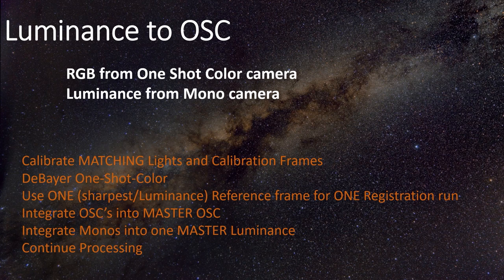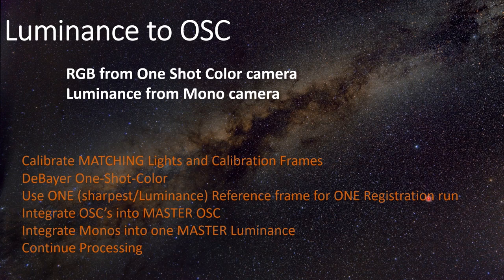Not all diverse data stems from a goof — sometimes you want to do something different. For instance, many people use a one-shot color camera to get their RGB and get their luminance from a mono camera. To do that, calibrate matching lights with calibration frames as always, de-Bayer your one-shot color, and use the sharpest luminance as one reference frame for registration with all sub-frames — whether one-shot color or luminance. Then integrate your one-shot colors into a master OSC and your monos into a master luminance, and combine them as you would with any LRGB processing.